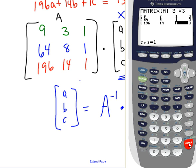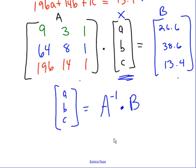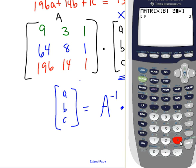Then I need to go to my other matrix. I've got to put in my answer matrix, so I've got to put in matrix B here. So I'm going to edit matrix B, and it is three rows by one column. And my answers were 26.6, 38.6, and 13.4, so those are just coming from matrix B.